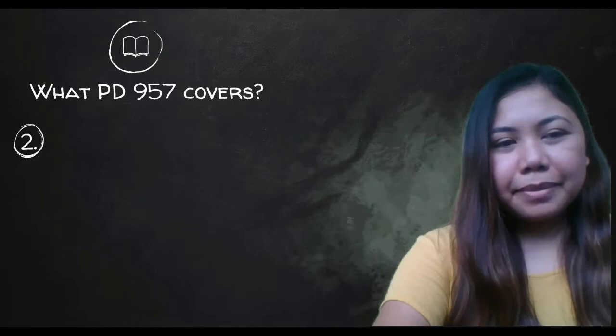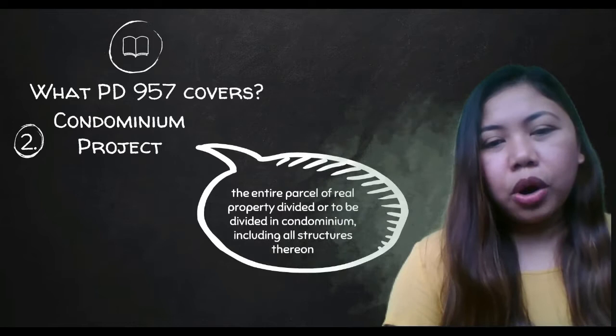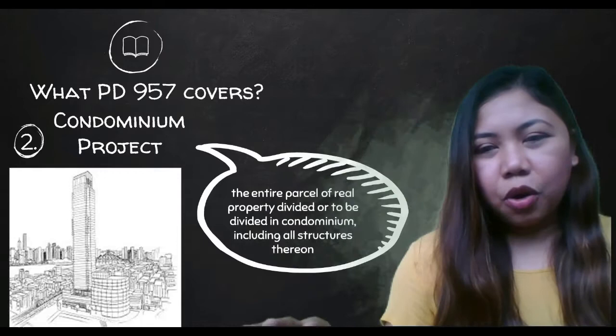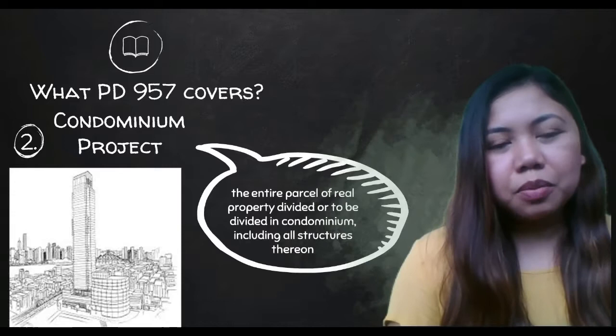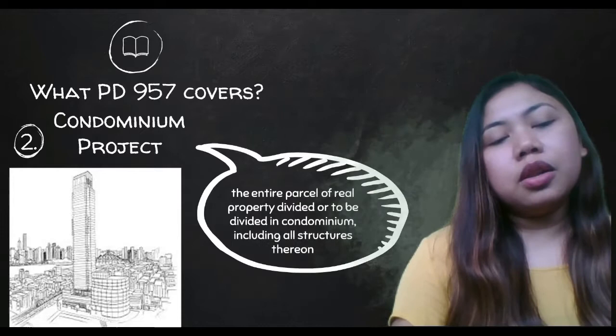Second is a condominium project. By definition, it is the entire parcel of real property divided or to be divided into condominiums, including all structures thereon. Compared to a subdivision project, which is developed horizontally, the condominium project is developed vertically. Usually you will see condominium projects in the city or highly urbanized city because the buyer will just own a part of the building.